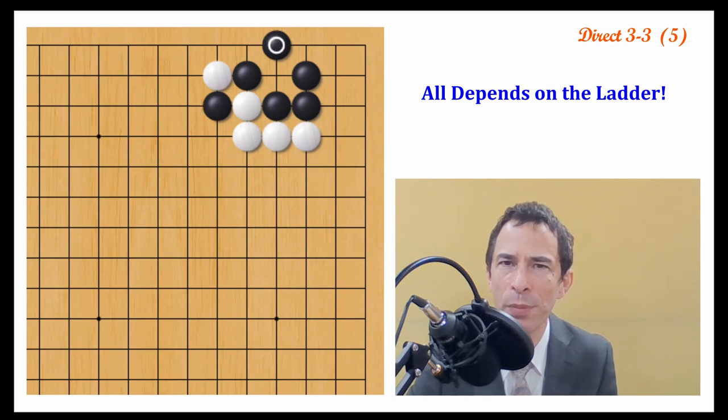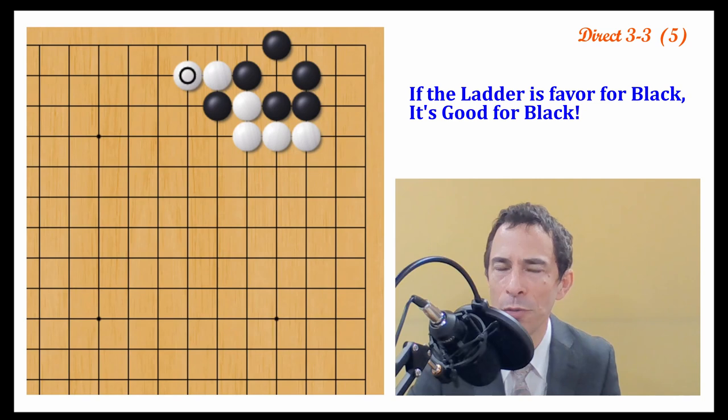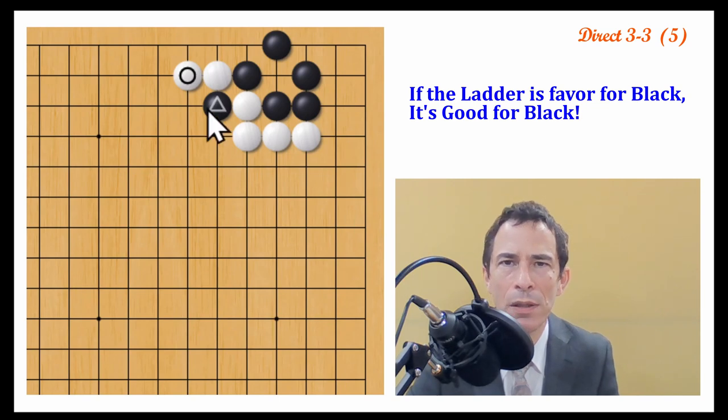If the ladder favors black, and white is going to play something like this, this is probably good for black now, because the group in the corner is completely alive. And this stone on the outside, it still has a lot of potential. So if the ladder favors black, I would not play this way with white. So it all depends on that.